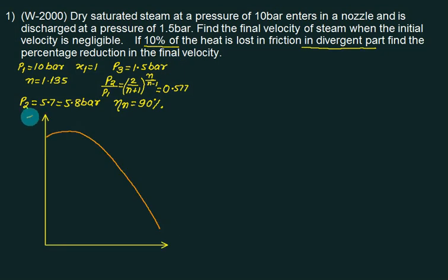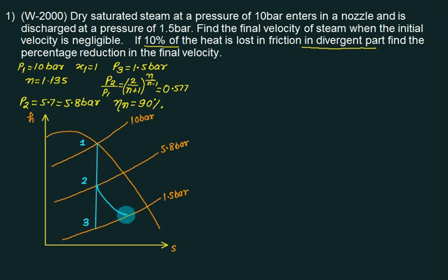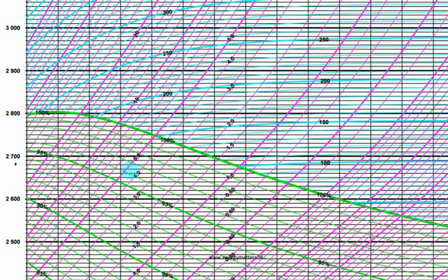This one is H-S diagram. We have three pressure lines. First is 10 bar, second is 5.8 bar, third is 1.5 bar. This one is ideal process. So this one is 3 dash. 1 to 2 is ideal. This is 10 bar line, 10 bar and this one is dry and saturate line, 100%. This is your point number 1. Mark your point number 1.